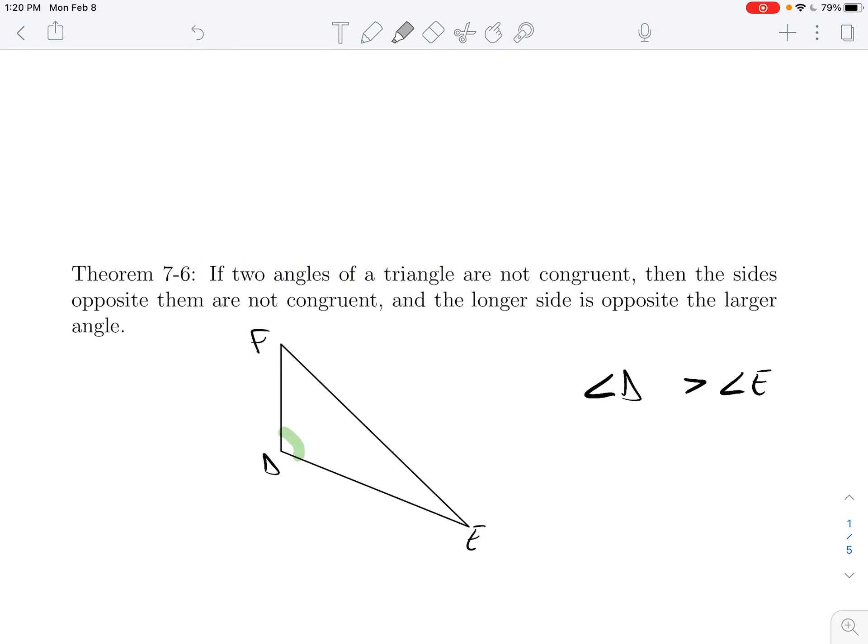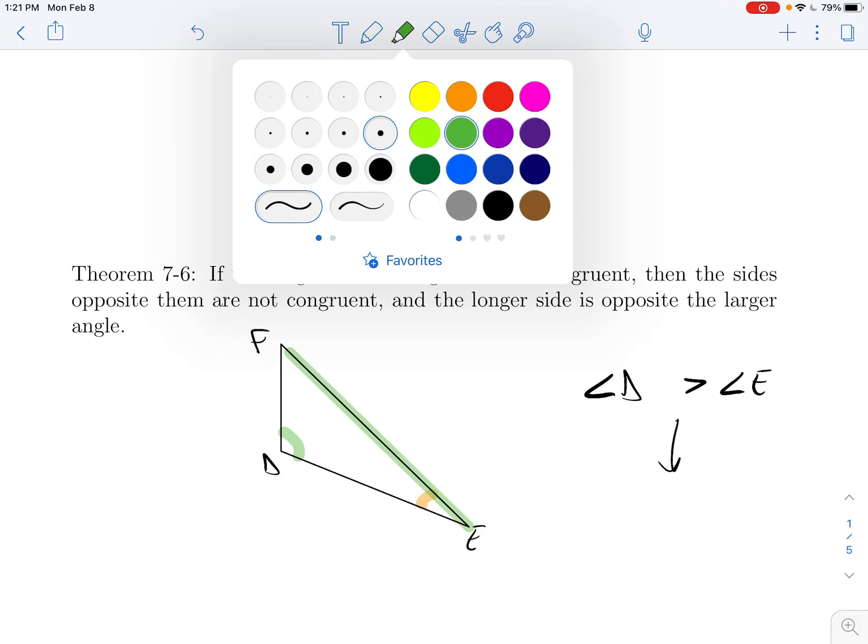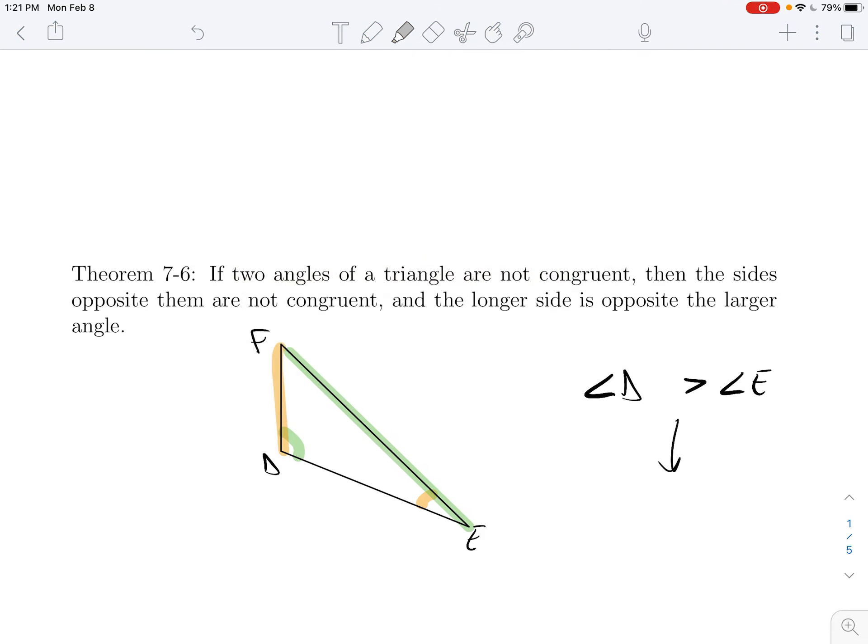So here's angle D, it looks like it's about 100 degrees or so. Here's angle E, it looks like it's about 30 degrees. When that occurs, the side opposite the bigger angle will be bigger than the side opposite the smaller angle. So what will be true is that EF will be bigger than DF. It's the converse of what we saw before.